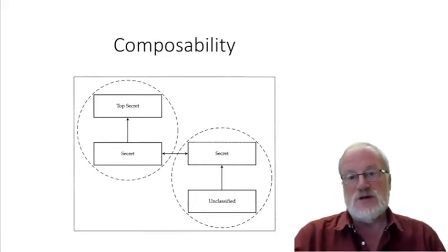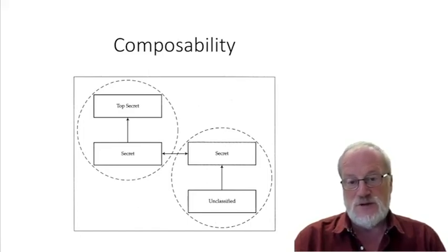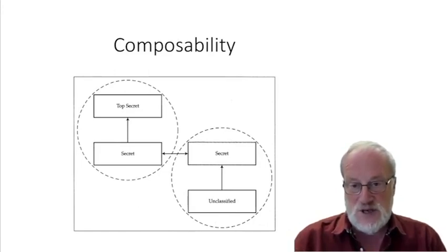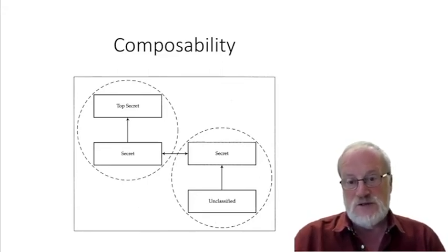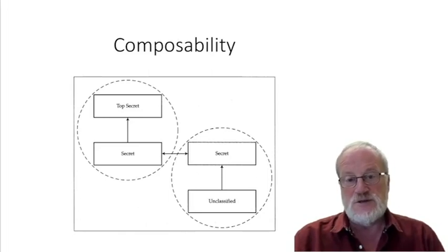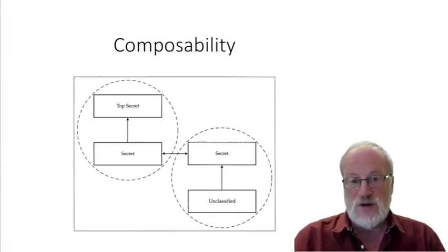Further problems with multi-level secure systems include composability. If you have a pump reckoned good enough to separate top secret from secret, and another separating secret from unclassified, someone who can defeat your pump can send information from top secret all the way down to unclassified. This illustrates a very general principle in security engineering: the security properties of components do not in general compose. As soon as you connect two provably secure systems together, or allow feedback, the security proof is typically voided, and you must be very careful about what security proofs and arguments actually mean.